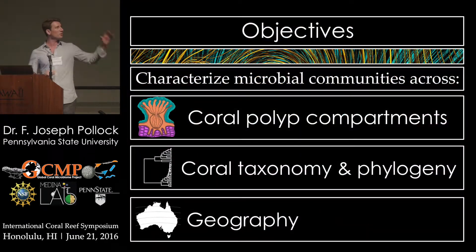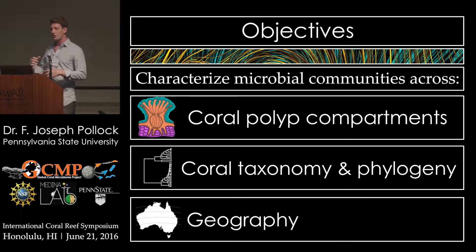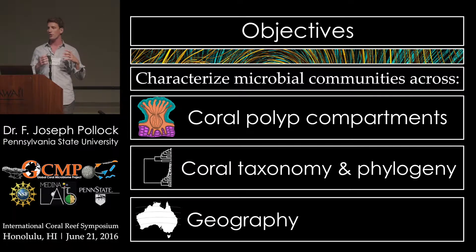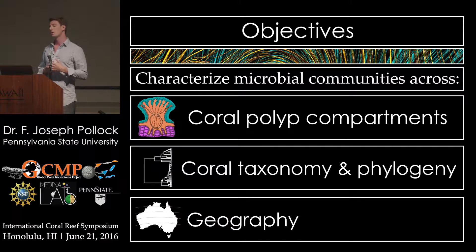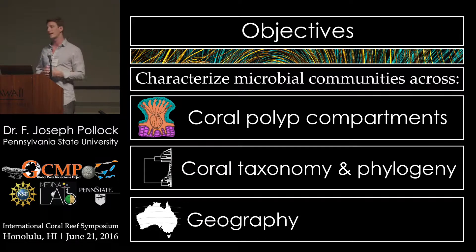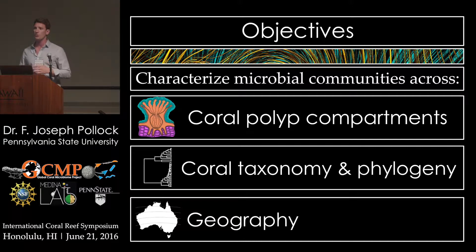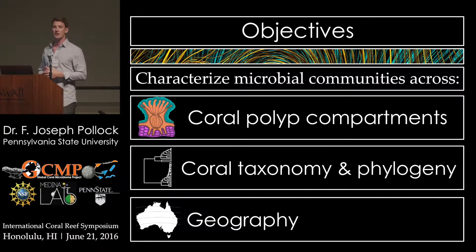This leads us to our first objective: to understand the structure of microbial communities across compartments within a coral polyp. We'll then look at the role of coral taxonomy and coral phylogeny in structuring coral microbiome communities, and we'll end by looking at the role of geography in structuring these communities.